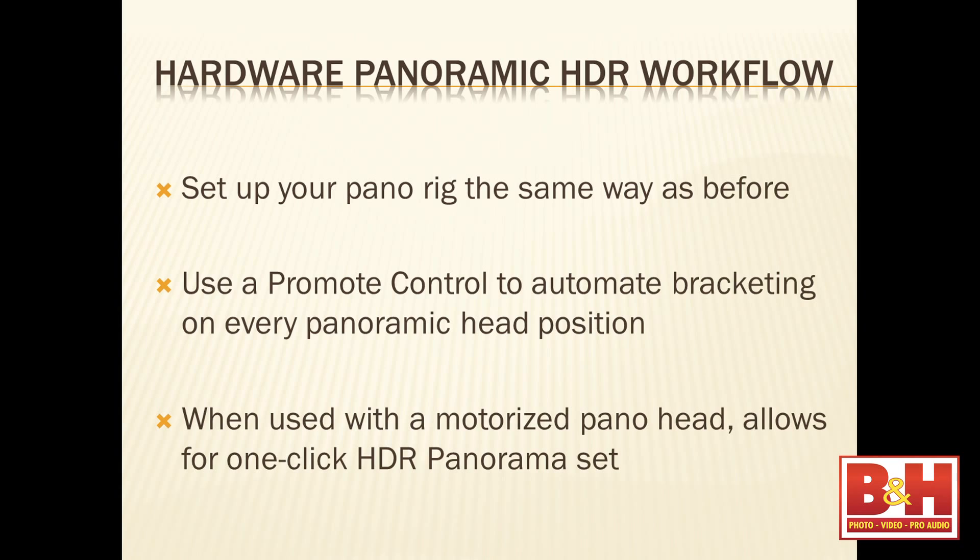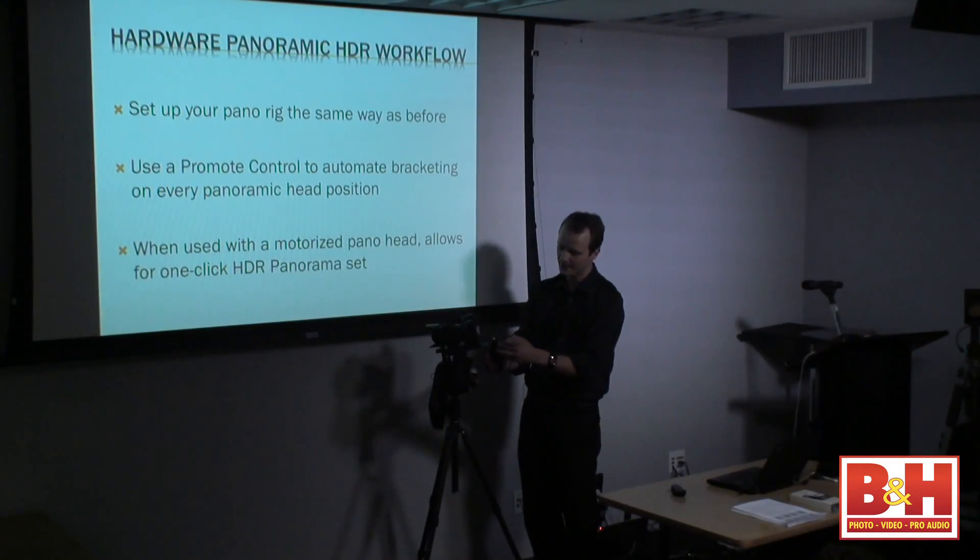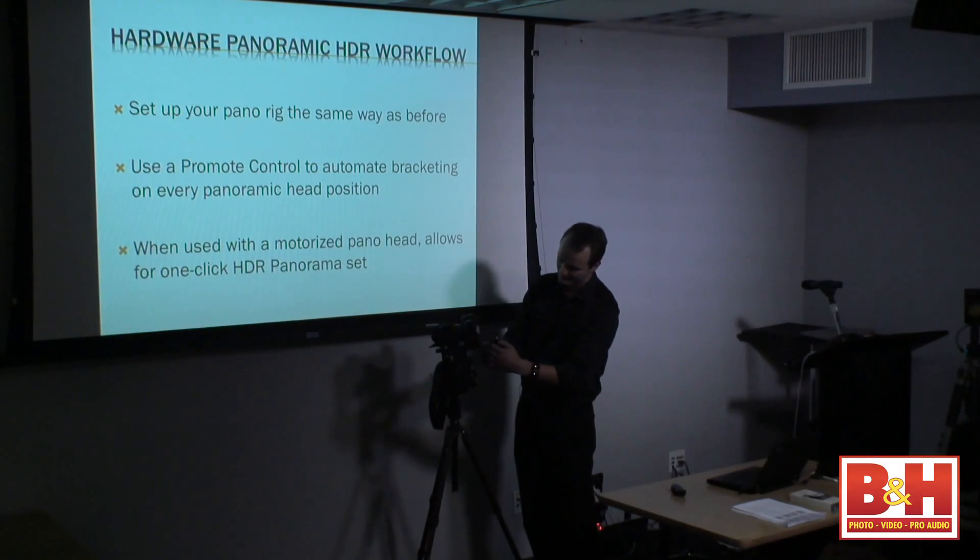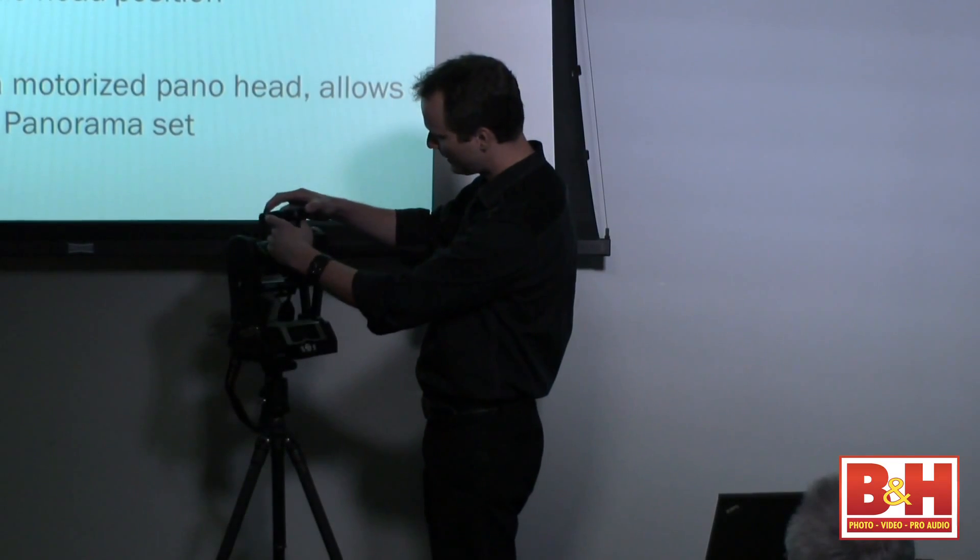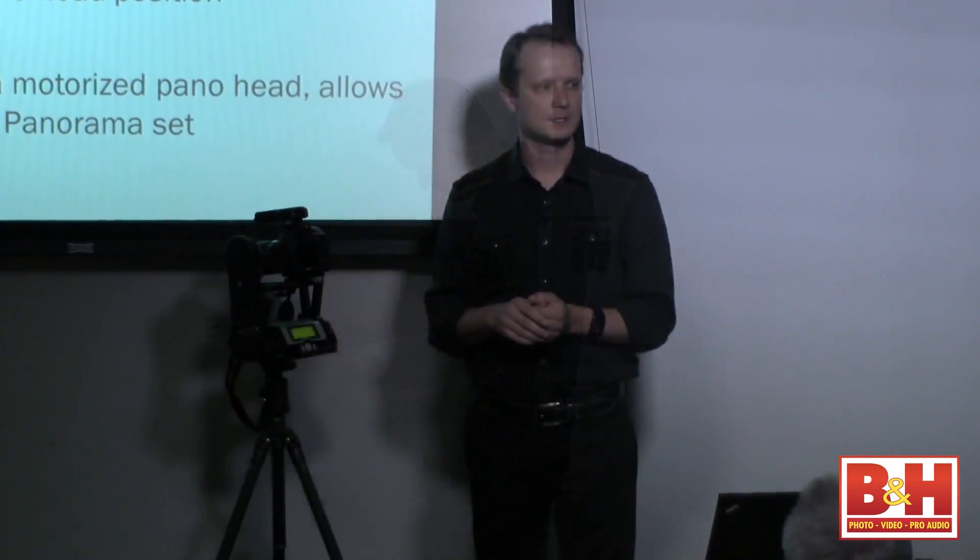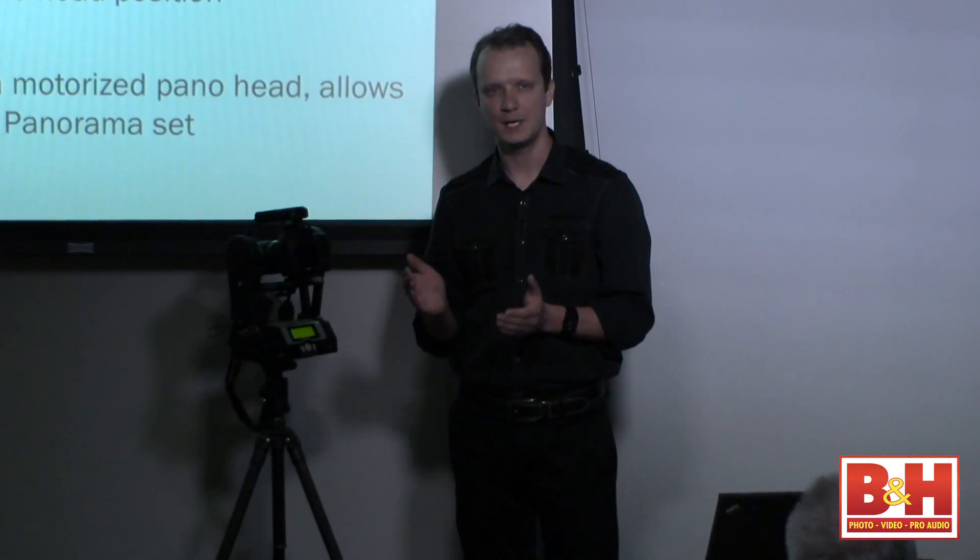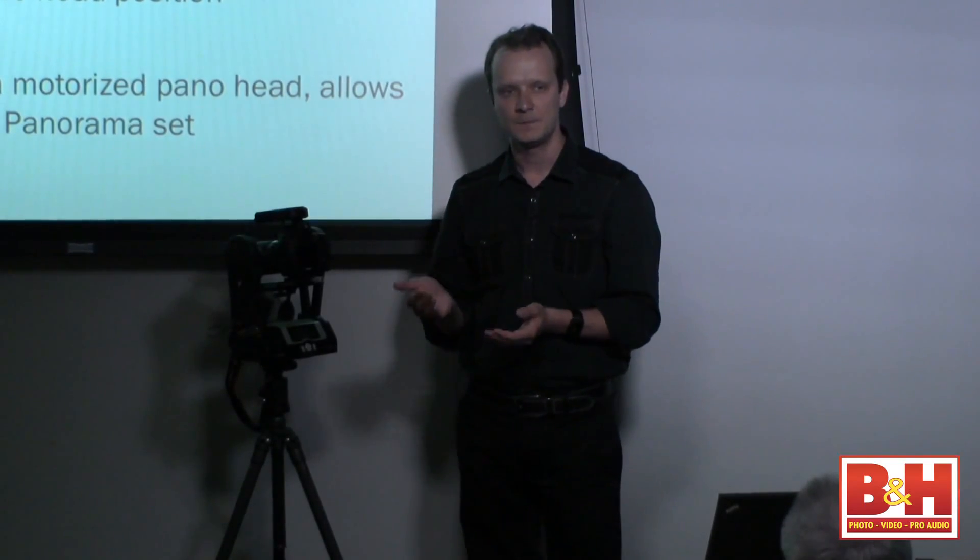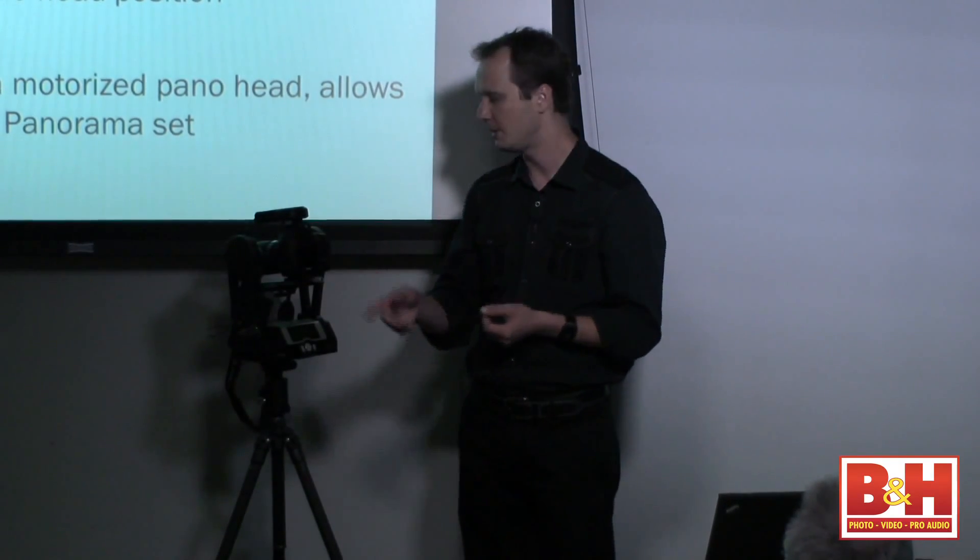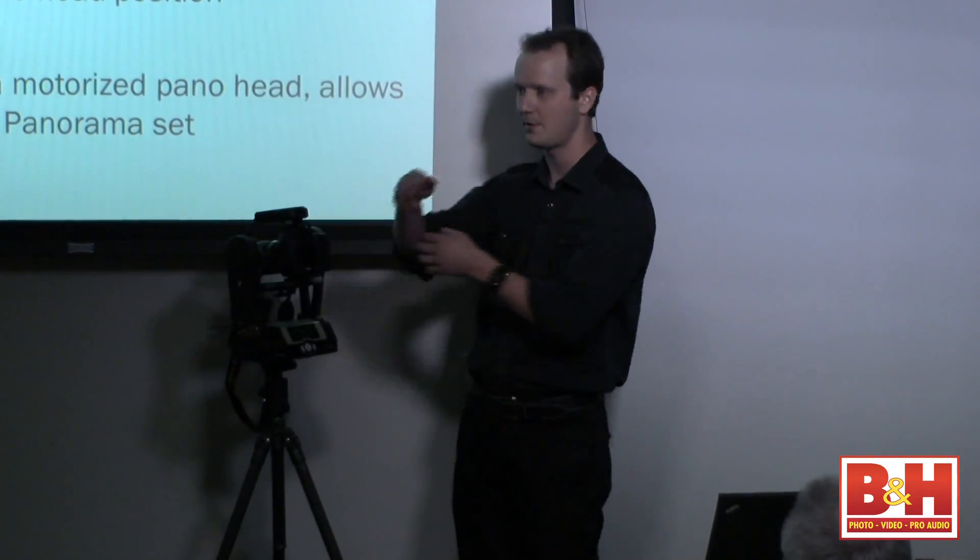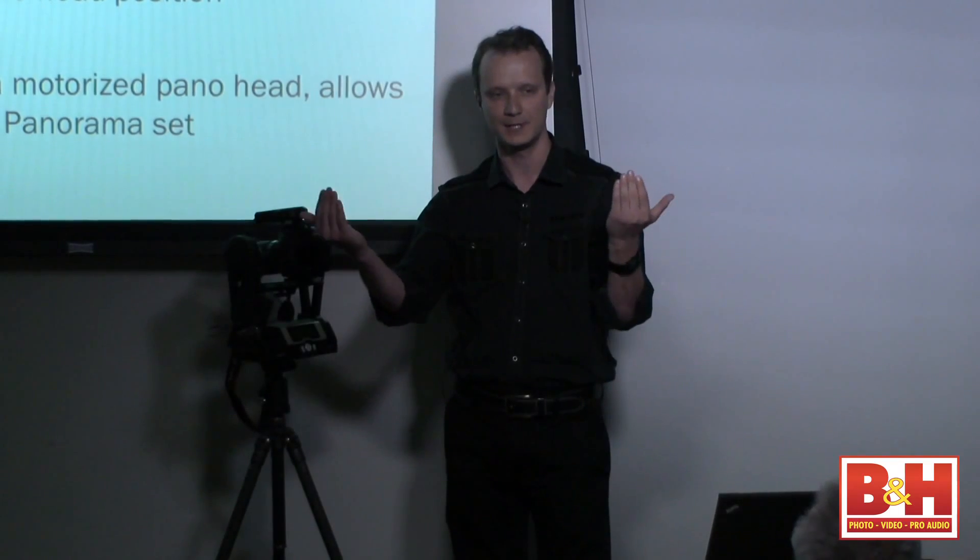So the hardware panoramic HDR workflow is pretty simple. You would connect Promote Control the same way you do to your camera, and then make a little trick. Connect the panoramic head that normally is used to trigger the camera to the Promote Control instead. What that does is the panoramic head is going to tell Promote Control to start a bracket at every spot. So the question is, how did we come up with 11 exposures for the particular scene? It is not an easy question to answer.